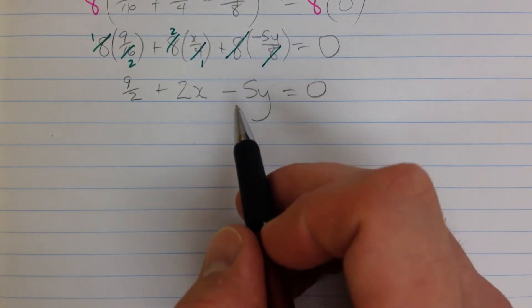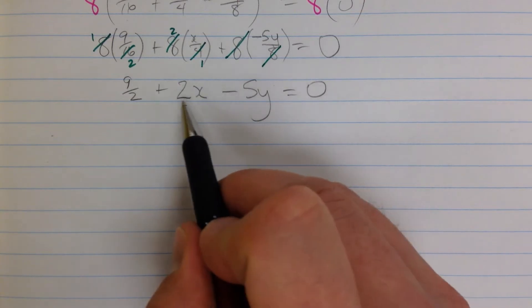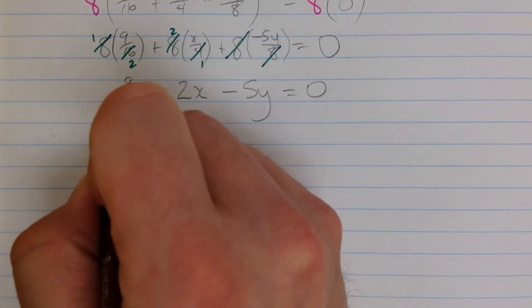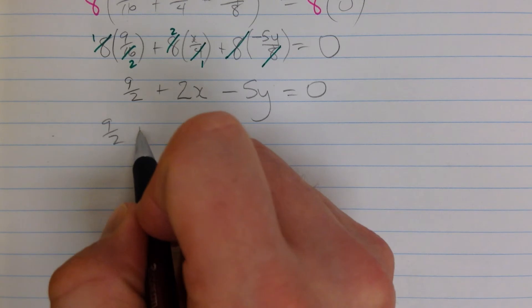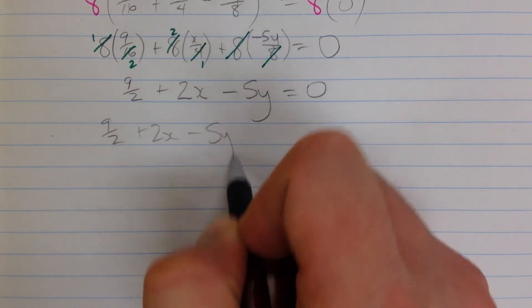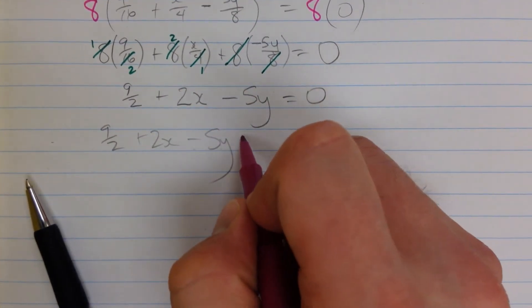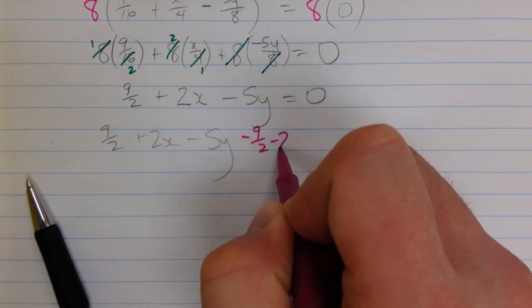Okay, we're getting pretty close now. I want this y by itself, let's get rid of these other things. I'm going to do it in one step, 9 halves, plus 2x, minus 5y, and here I'm going to subtract 9 halves and subtract 2x.